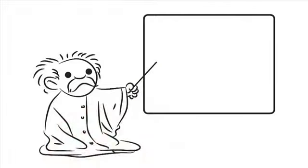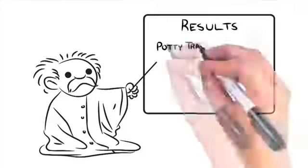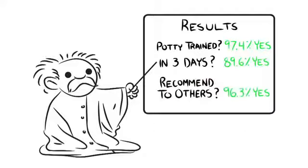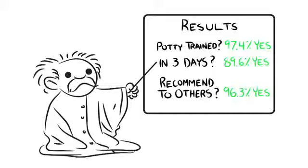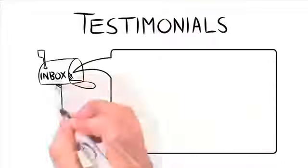The results of the questionnaire I sent out were as follows. Is your child now fully potty trained after using my system? Yes, 97.4%. No, 2.6%. Did you get results within the first three days? Yes, 89.6%. No, 10.4%. Would you recommend StartPottyTraining.com to others? Yes, 98.9%. No, 1.2%. Will you use these methods if you have another child? Yes, 96.3%. No, 3.7%.